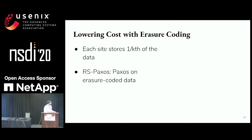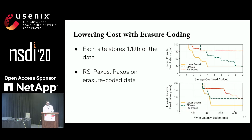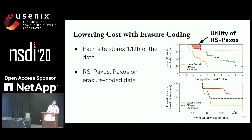RSPaxos is a Paxos variant that operates on erasure coded data. We see that there is some utility in using RSPaxos — ePaxos has a minimum storage overhead it must incur just by nature of using replication, so RSPaxos is able to go lower than that.